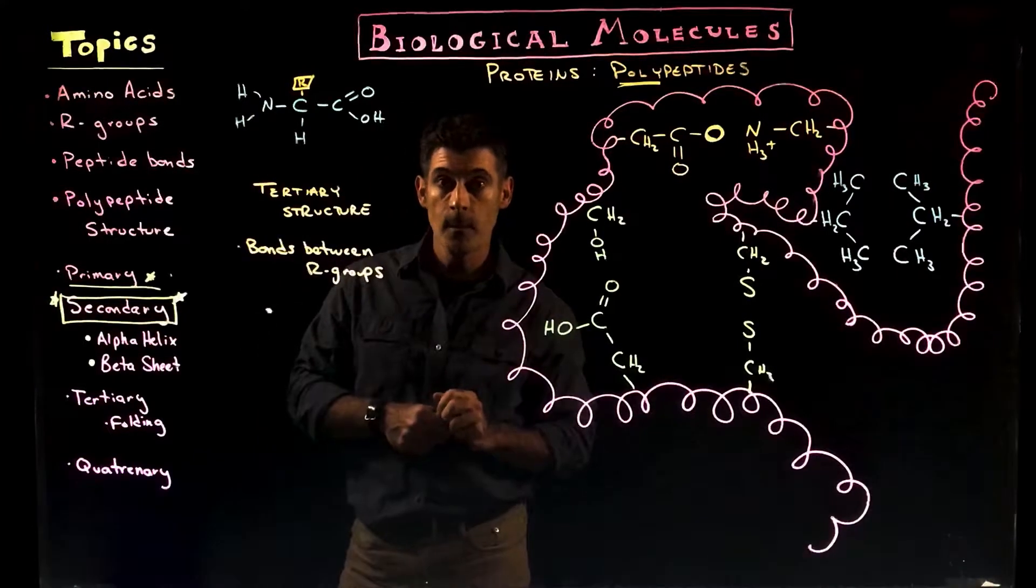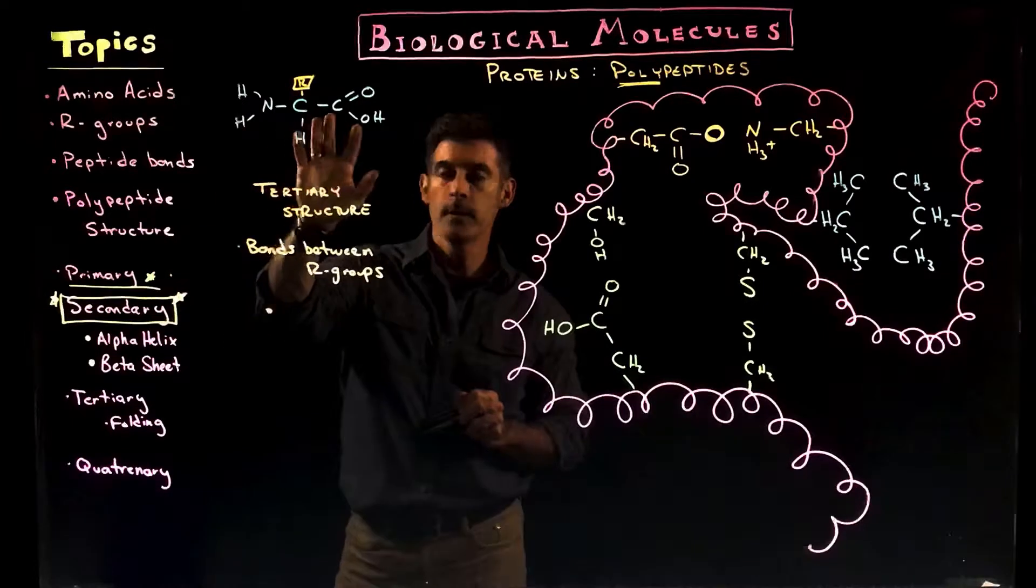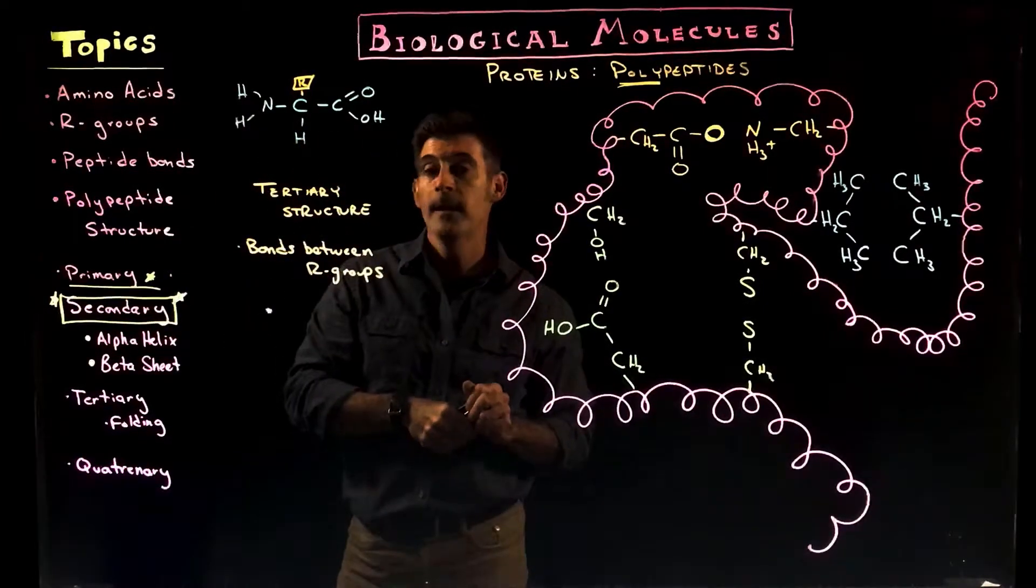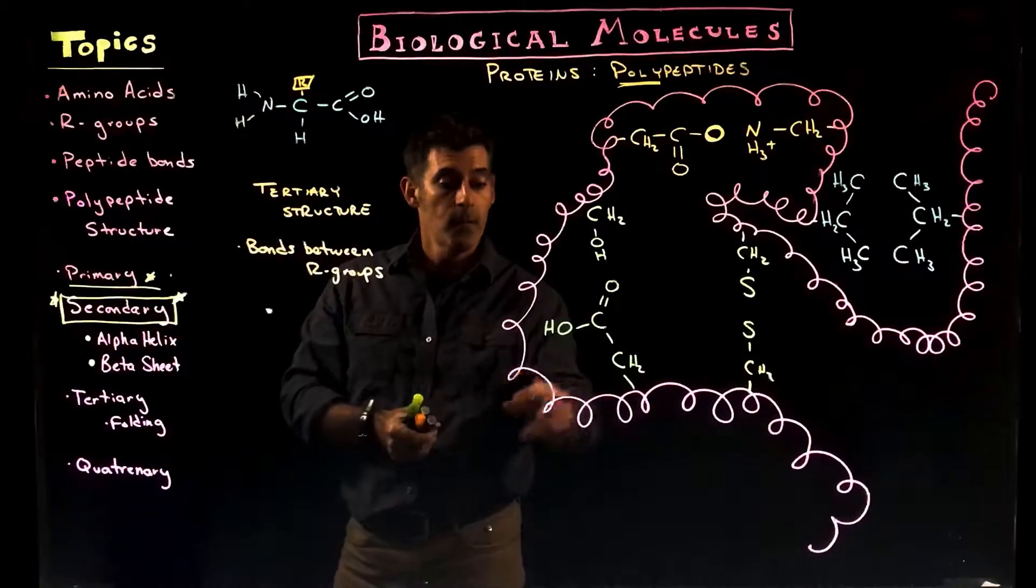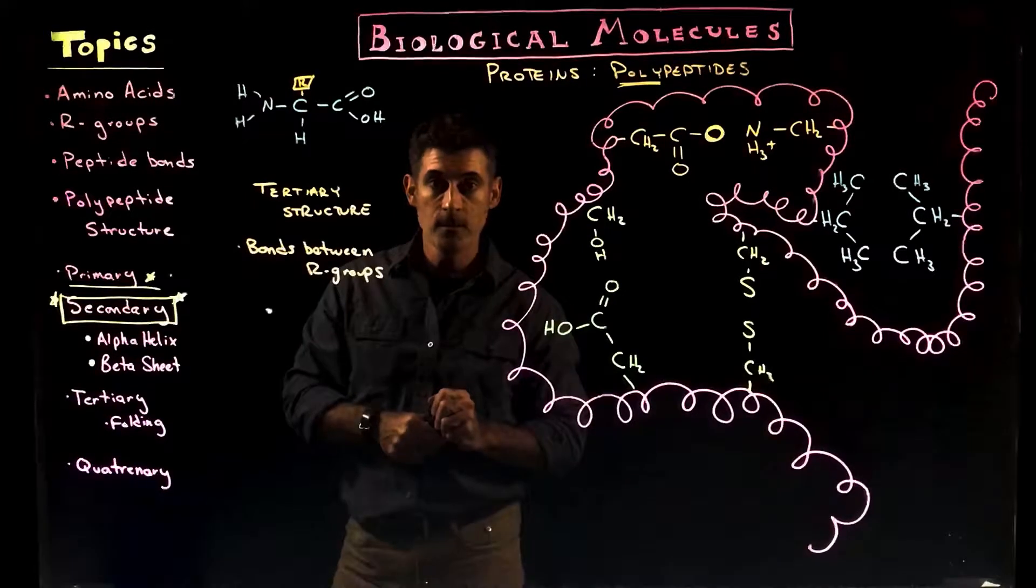All right, so we're still talking about proteins. We've gone over primary structure, which were individual amino acids joined together with peptide bonds. Then we talked about secondary structure, which formed these alpha helices, and also a zigzag beta sheet structure.